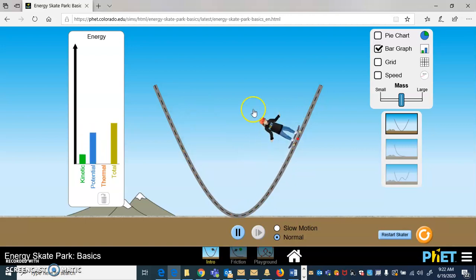If we look over here at this total amount of energy, it's not changing because I'm not doing any work. Gravity is doing work, but gravity is a conservative force. For now, just think about the fact that there's no external forces like me grabbing him or friction. And so the amount of total mechanical energy is staying the same.